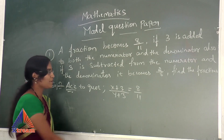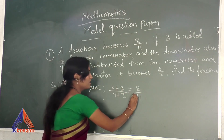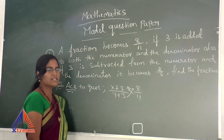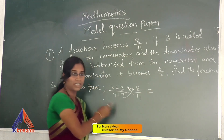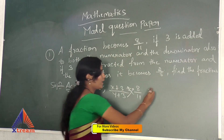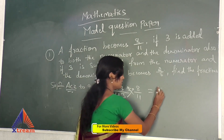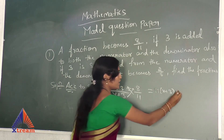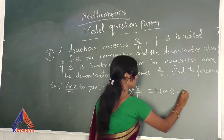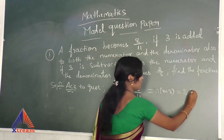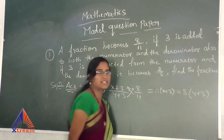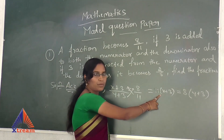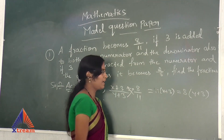What we have to do is cross multiply. 11 into X plus 3 is equal to 8 into Y plus 3. This is the cross multiply method.